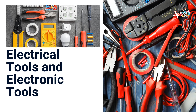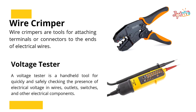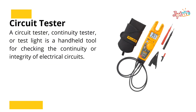Next, the electrical and electronic tools. Wire Crimper: Tools for attaching terminals or connectors to the end of electrical wires. Voltage Tester: A handheld tool for quickly and safely checking the presence of electrical voltage in wires, outlets, switches, and other electrical components. Continuity Tester: Also called a test light, it is a handheld tool for checking the continuity or integrity of electrical circuits.